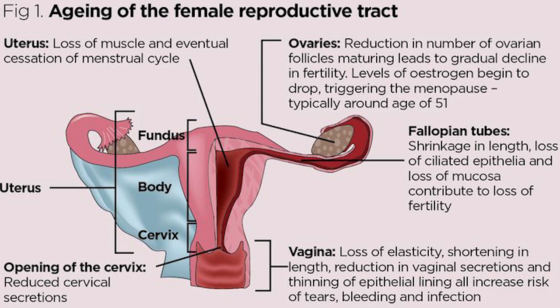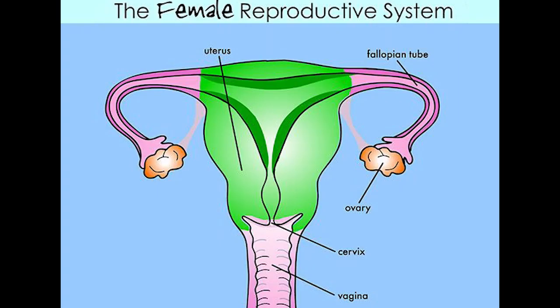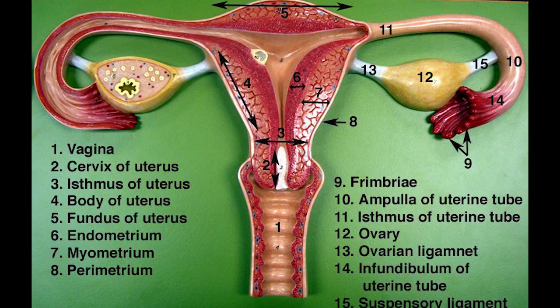In humans, the female reproductive system is immature at birth and develops to maturity at puberty to be able to produce gametes, and to carry a fetus to full term. The internal sex organs are the vagina, uterus, fallopian tubes, and ovaries.